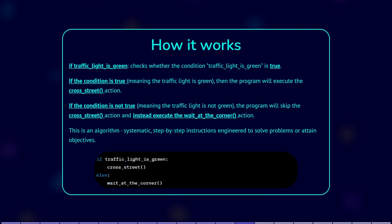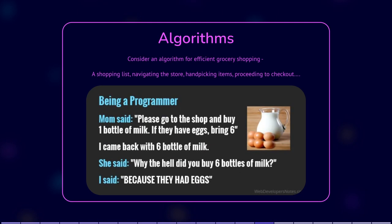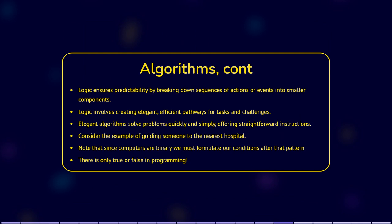In programming, we use if-then statements to replicate this decision-making process in a logical way that the computer can understand. This is an algorithm — systematic, step-by-step instructions engineered to solve problems or attain objectives. Consider an algorithm for efficient grocery shopping: compiling a shopping list, navigating to the store, navigating the store, hand-picking items, and proceeding to checkout. Exceptional algorithms are engineered to streamline processes elegantly.